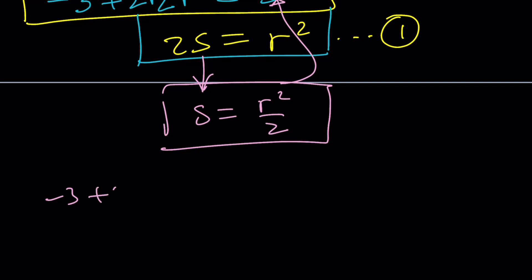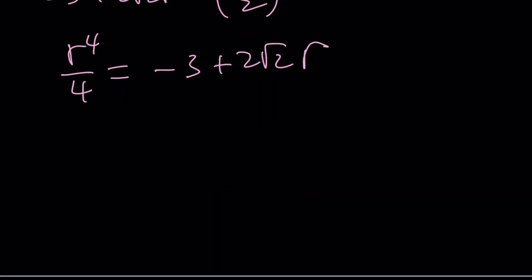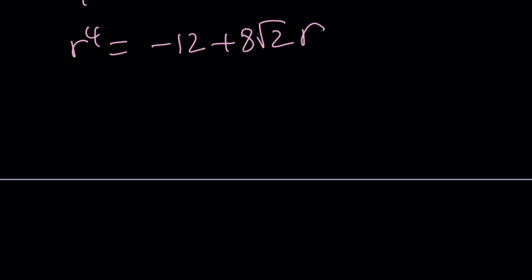Let's go ahead and isolate s from the second equation, write it as r²/2, and then we're going to substitute that here. Ready? -3 + 2√2r = s², which is (r²/2)². If you square this, you're going to get a quartic, but that's okay. r⁴/4 = -3 + 2√2r. Multiply both sides by 4. r⁴ = -12 + 8√2r. And now to get a full quartic, let's put everything on the same side. Notice that this is a depressed quartic, missing r³ and also r², which is very nice, right?